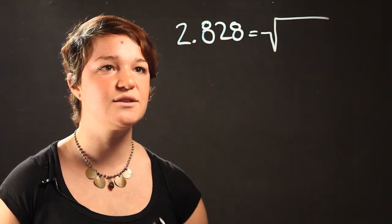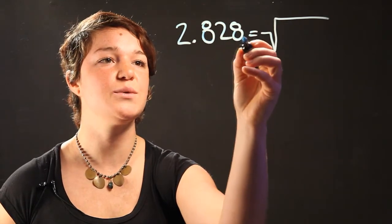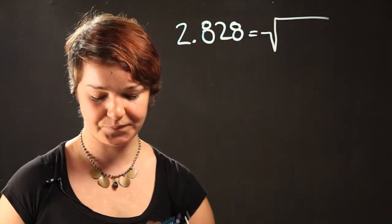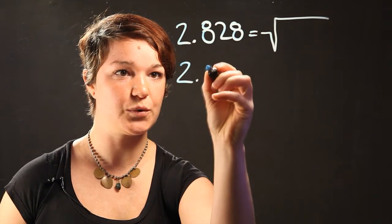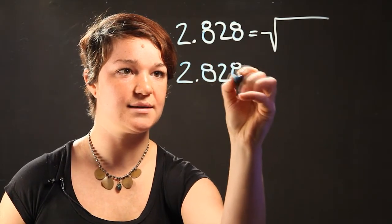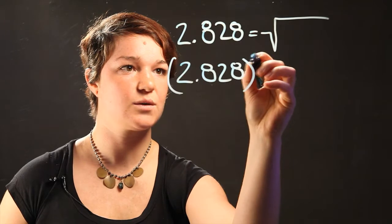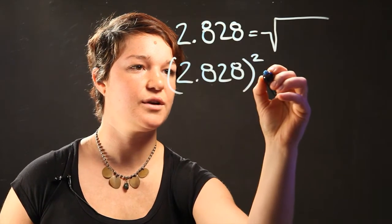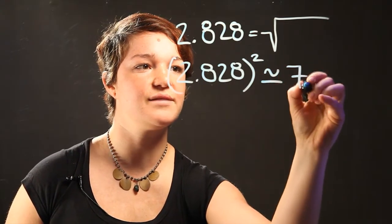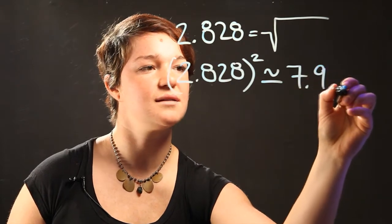So if we take 2.828 multiplied by itself, so it's 2.828 squared, you're going to get an approximate number of 7.9 dot dot dot.